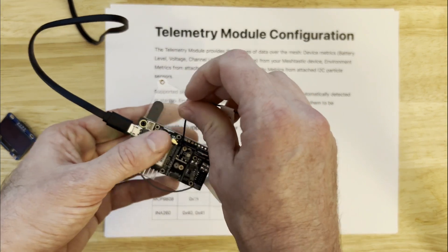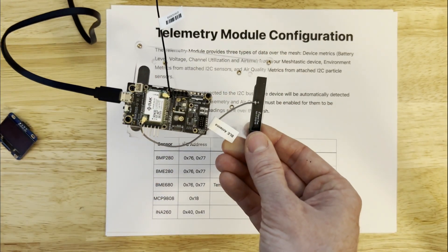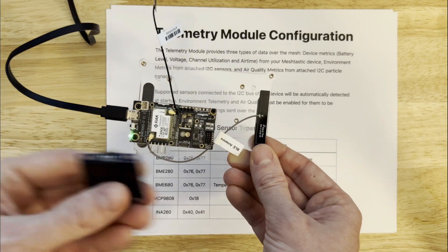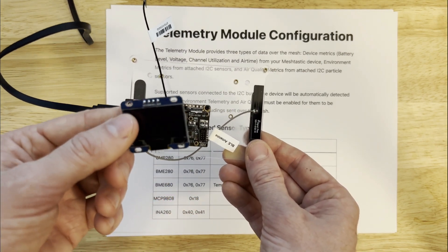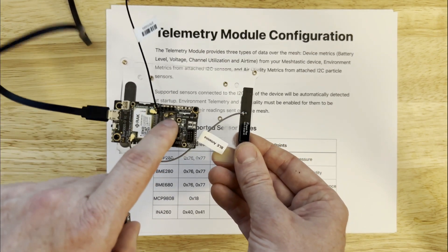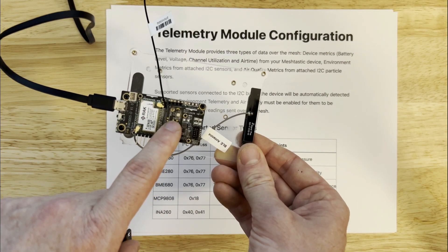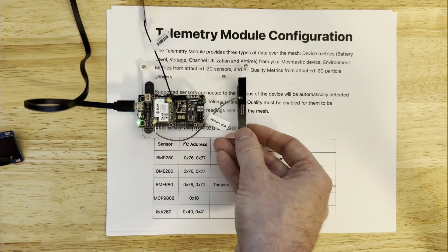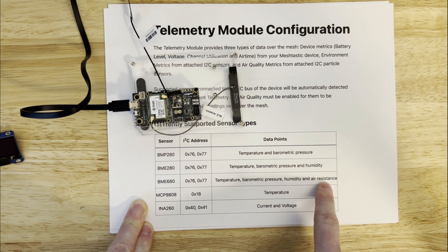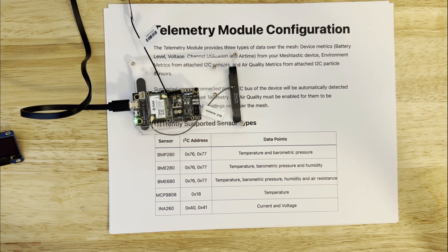The neat thing about telemetry in Meshtastic 2.0 is we actually auto-detect a lot of the supported sensors. This particular chip is one of Bosch's flagship sensors — it's called the Bosch BME 680. That one has temperature, barometric pressure, humidity, and gas resistance. I really recommend this one. You'll pay a little bit more for that chip, but it's very powerful and it's also accurate.